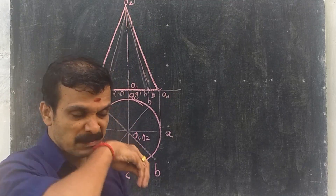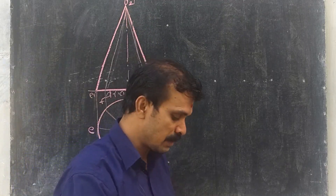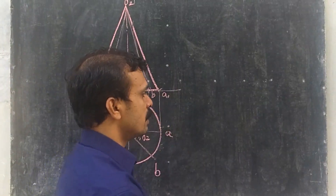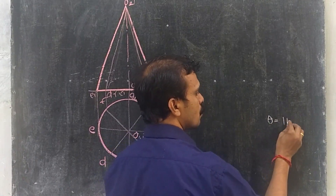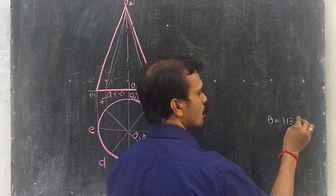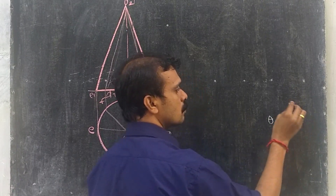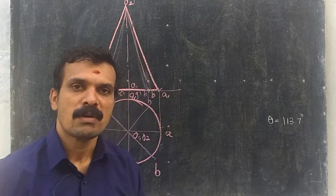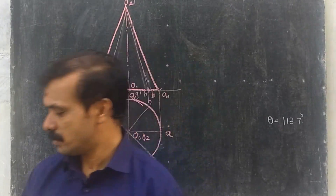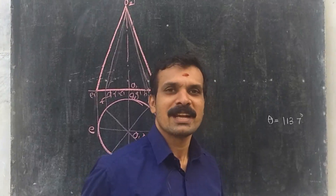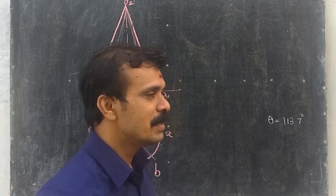The formula for the sector angle is theta equals 360 times r divided by L. On calculating, you will get theta equal to 113.7 degrees. So we can now construct the development.